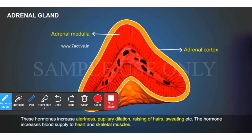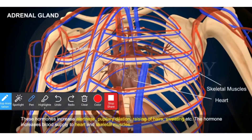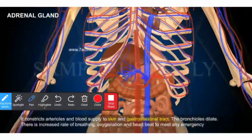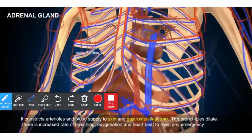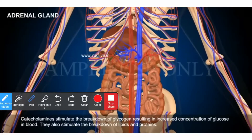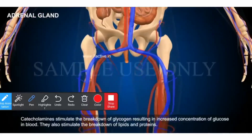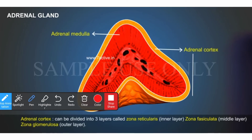These hormones increase alertness, pupillary dilation, raising of hairs, and sweating. The hormones increase blood supply to the heart and skeletal muscles, and constrict arterioles reducing blood supply to the skin and gastrointestinal tract. The bronchioles dilate. There is an increased rate of breathing, oxygenation, and heartbeat to meet any emergency. Catecholamines stimulate the breakdown of glycogen, resulting in increased concentration of glucose in the blood. They also stimulate the breakdown of lipids and proteins.